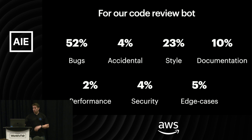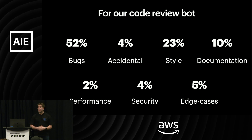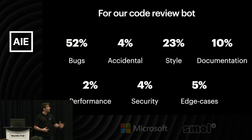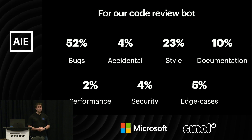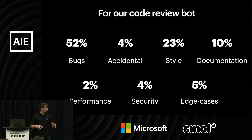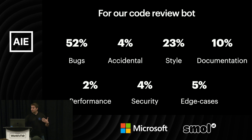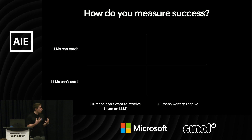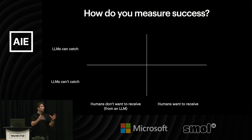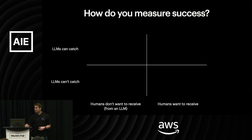First and foremost, we started by just looking at what kinds of comments the system is currently leaving. For us, this is roughly the proportion we see of comments being left by the LLM right now, based on what we've seen. But the deeper question for us was: how do we measure success? Given this quadrant, how do we know that we're in the top right?